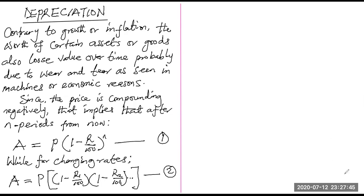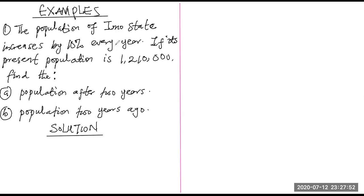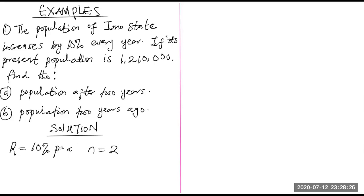Let's apply these teachings to different examples. Example one: the population of Imo State increases by 10% every year. The present population is 1,210,000. Since the rate is constant at 10% per year and n equals two years, we identify that n and r are both in years and are compatible.